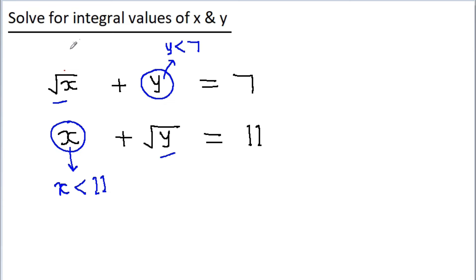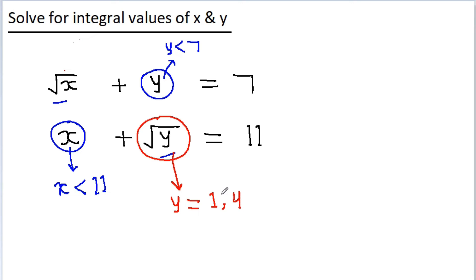As we want integral solutions, root y should be an integer, and for that y should be a perfect square. We already know that y is less than 7, so the possible values of y are either 1 or 4. Similarly, root x should also be an integer, and for that x should be a perfect square, so the possible values of x are either 1, 4, or 9.